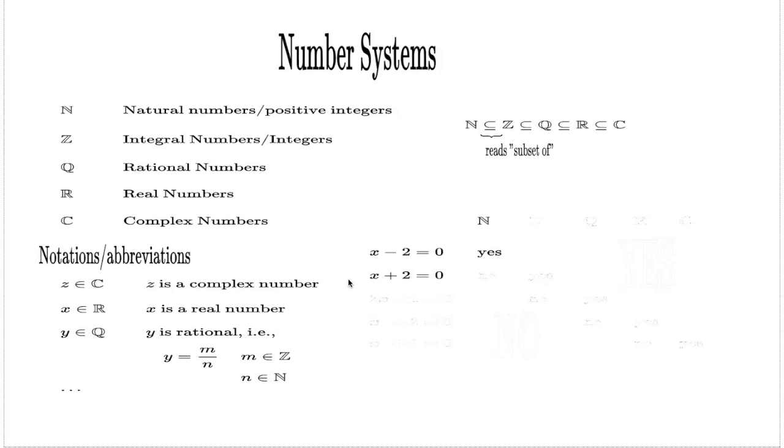However, if you change your equation a little bit and take the equation x + 2 = 0, your number class N fails you right away. That was the reason why people introduced the Z class, because within the Z class, the solution to this equation is -2; you do have a solution.